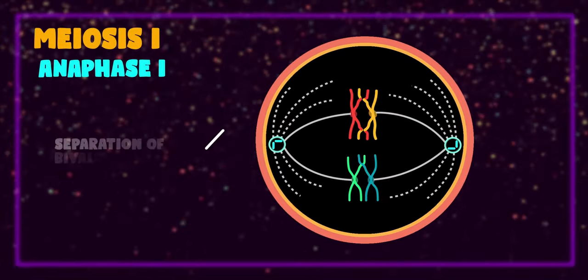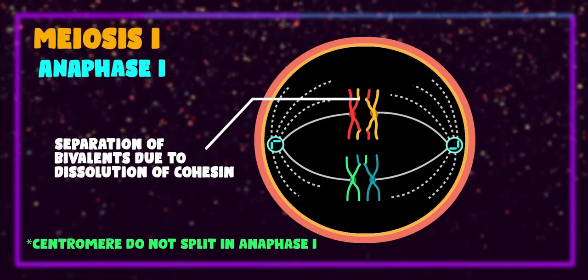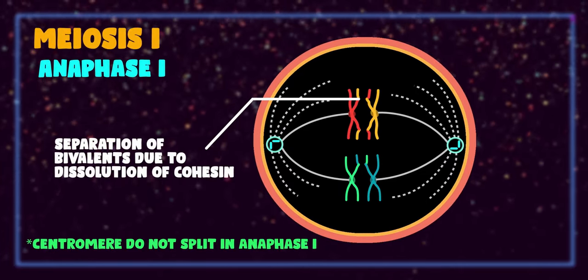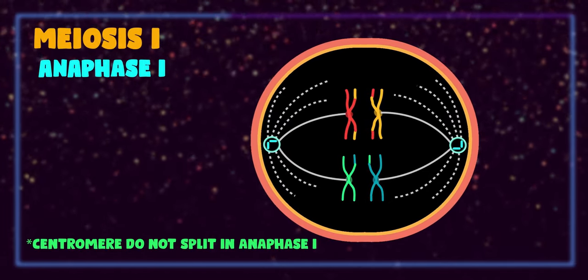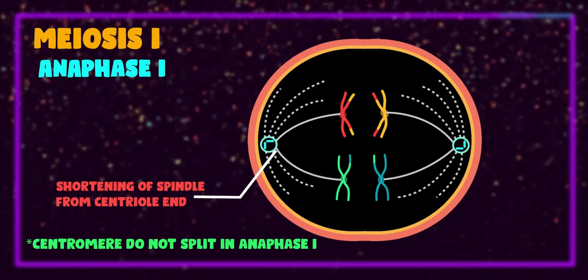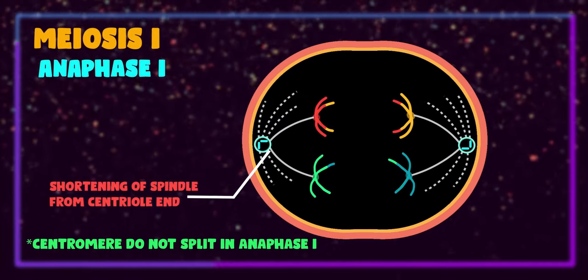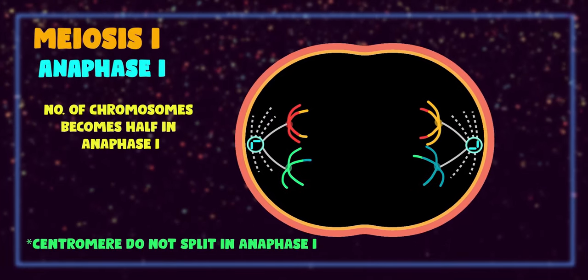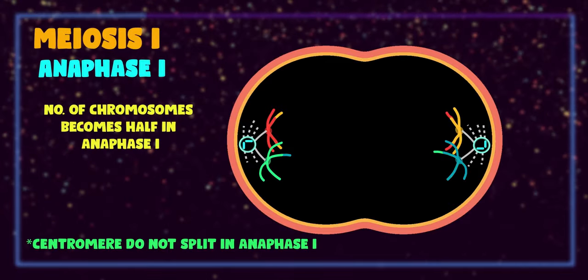In anaphase one, the bivalents are separated due to shortening of spindle from centriole end. Since splitting of centromere does not occur in anaphase one, each chromosome having two sister chromatids moves towards either of the poles. Anaphase one completes when chromosomes reach the poles. Reduction in number of chromosomes occurs during anaphase one.